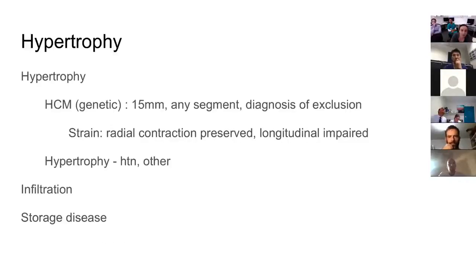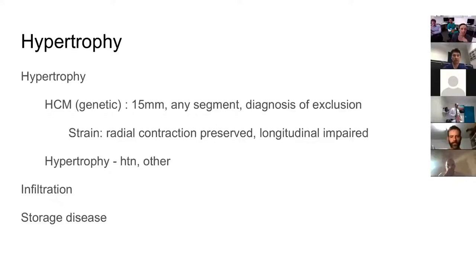Before going straight into left ventricular outflow tract obstruction, let's take a step back and talk about hypertrophy, because the classic LVOT obstruction diagnosis hinges on hypertrophic cardiomyopathy. To make that diagnosis, you need 15 millimeters as the cutoff, and it can be in any segment. It's not uncommon to get just the basal septal segment hypertrophied — that little nubbin is quite common in elderly people.